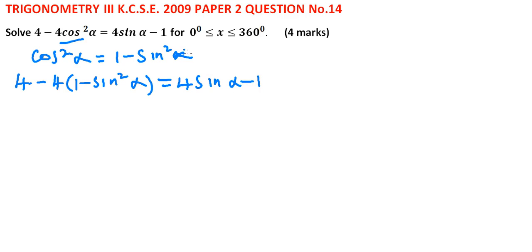From there, we rearrange our equation by opening this bracket. And we will be able to get a quadratic equation that is 4 sin squared alpha minus 4 sin alpha plus 1 is equal to 0.